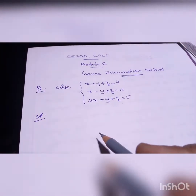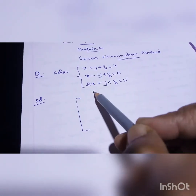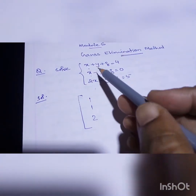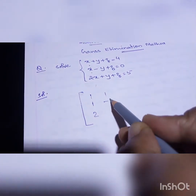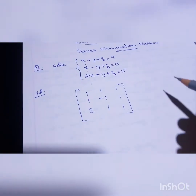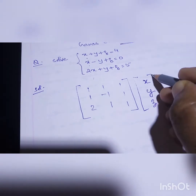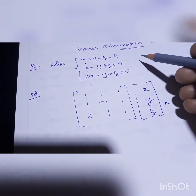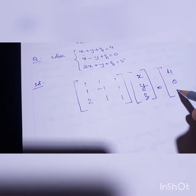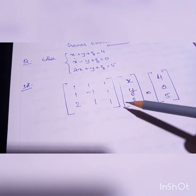Now let's come to the solution. Just make a matrix format from these equations. Take the x coefficients: 1, 1, 2. The y coefficients: 1, minus 1, 1. The z coefficients: 1, 1, 1. Then x, y, z as the variable column. And the constants on the right side: 4, 0, 5. So this is how we got the matrix from these three equations.